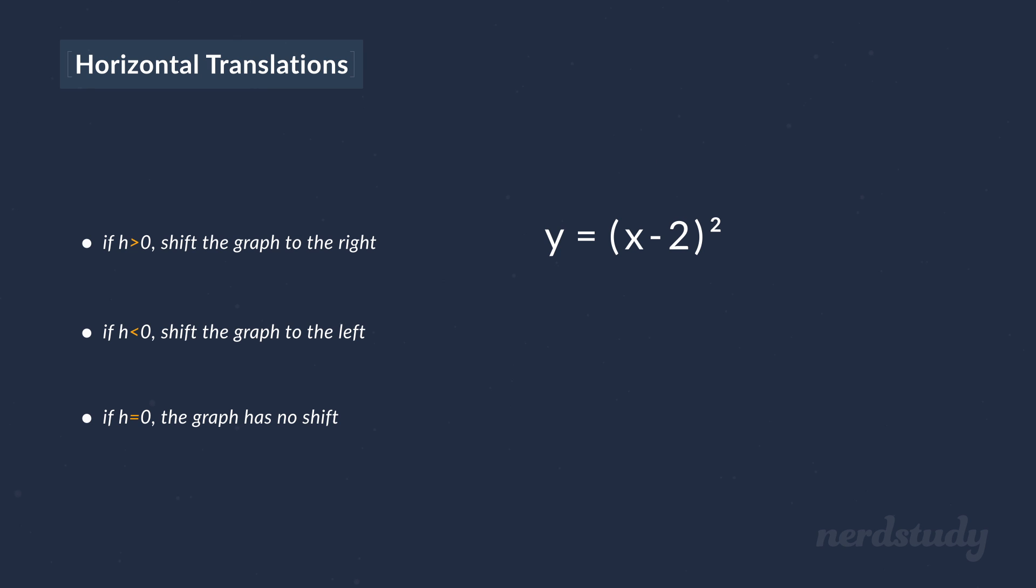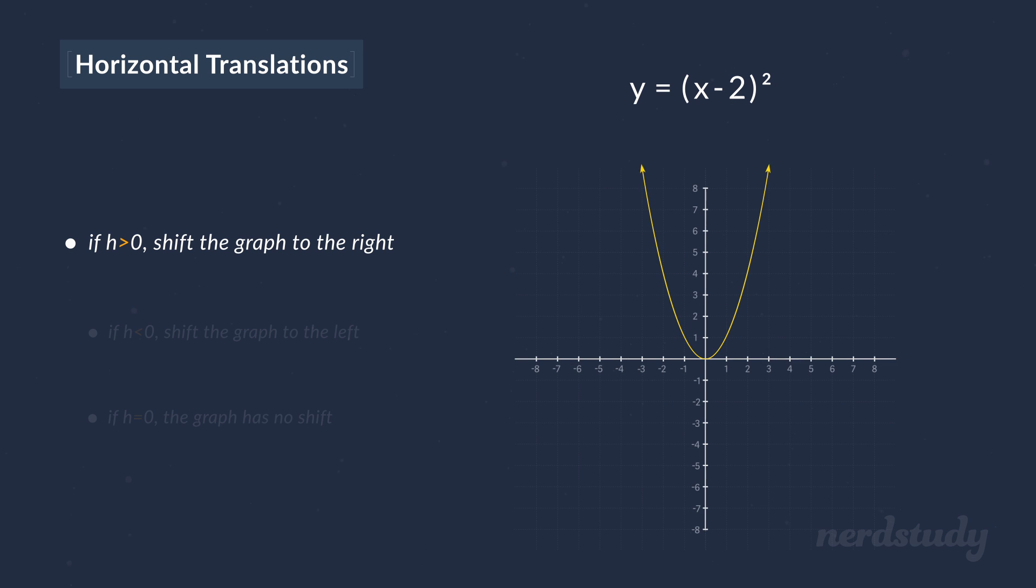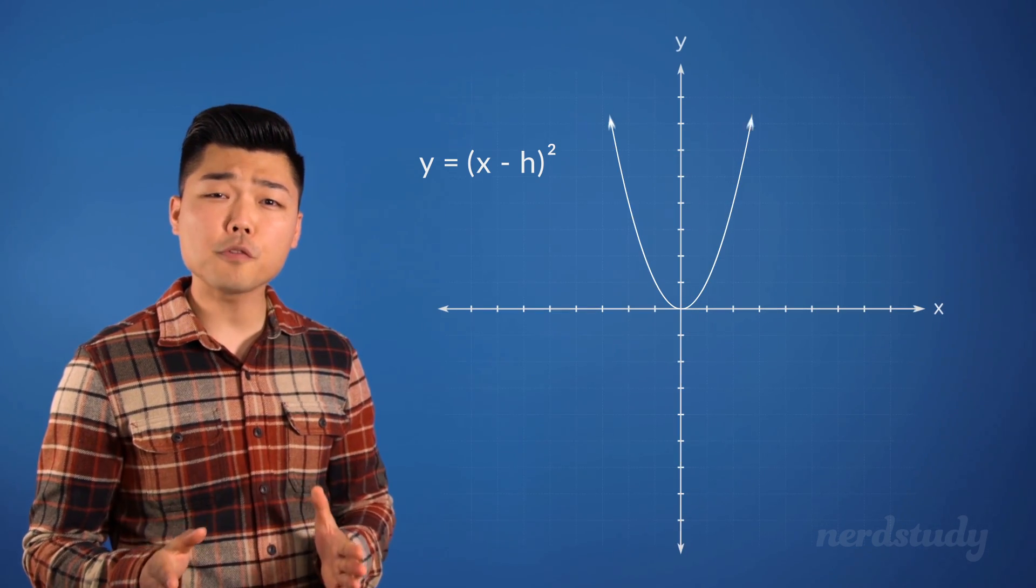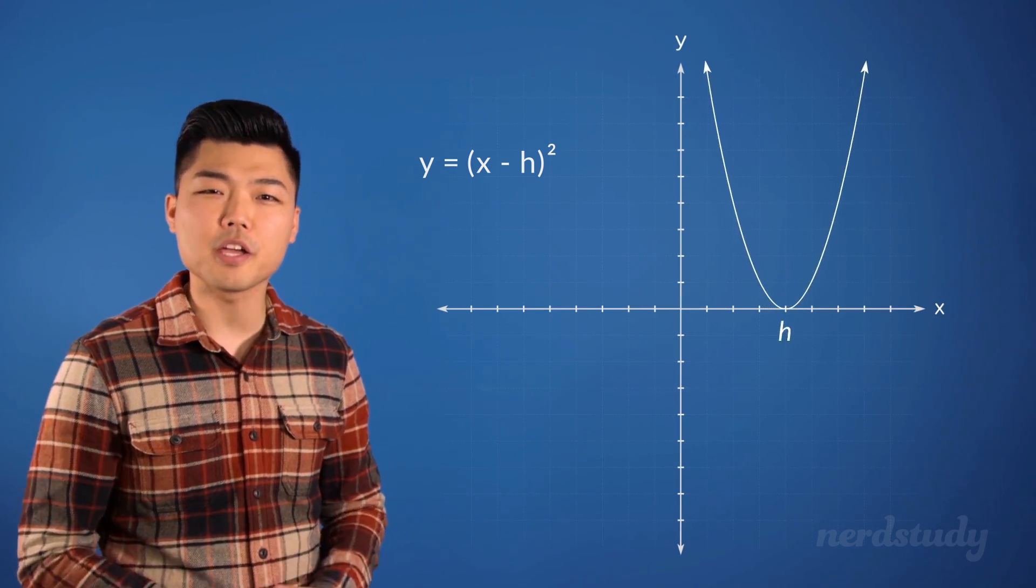So since we've established that our h is a positive number, we can count on the graph shifting over to the right by 2 units. The key here is that when you have an equation in this format, a positive h will move the graph to the right by h units.